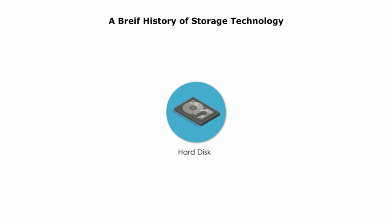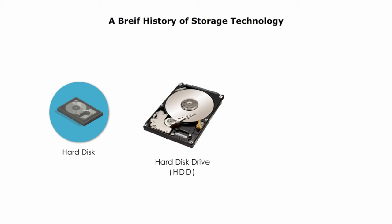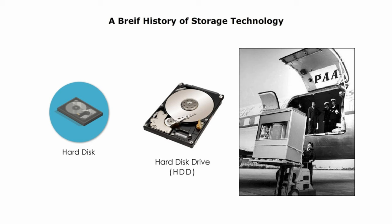Hard disk drives, or HDDs, store and retrieve data using magnetism. They had spinning disks inside them that read and write data with magnetic heads, and were known for large storage capacities at a low cost. This is a photo of an old hard disk drive from 1956 — it was large and very heavy, weighing more than a ton. It could only store 5 MB of information, which is very small by today's standards. For comparison, a single photo taken with a modern smartphone can easily be larger than 5 MB.